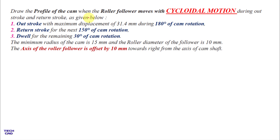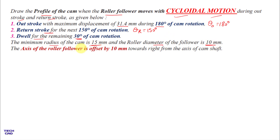Hello everyone. In this video we are going to make a cam profile when the roller follower moves with cycloidal motion. The follower moves with cycloidal motion during both outstroke and return stroke. In the outstroke, the maximum displacement is 31.4 mm during 180 degrees of cam rotation. In the return stroke, theta_r is 150 degrees, then the follower dwells for the remaining 30 degrees. The minimum radius of the cam is 15 mm, roller diameter is 10 mm, and the axis of the follower is offset by 10 mm towards the right side from the axis of the camshaft.